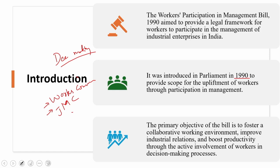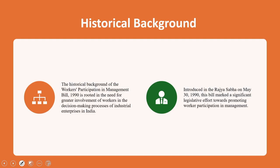Let us understand the historical background. We have traced the history of workers participation over the last entire century in the previous few lectures. The historical background of the Workers Participation in Management Bill 1990 is rooted in the need for greater involvement of workers in the decision making process of industrial enterprises in India. The bill was introduced in Rajya Sabha on May 30, 1990, marking a significant legislative effort towards promoting worker participation in management.